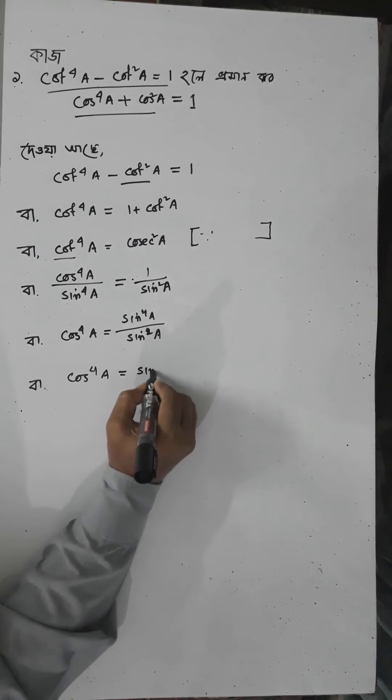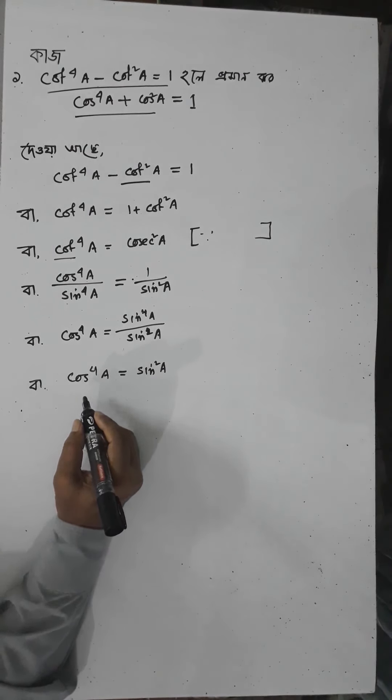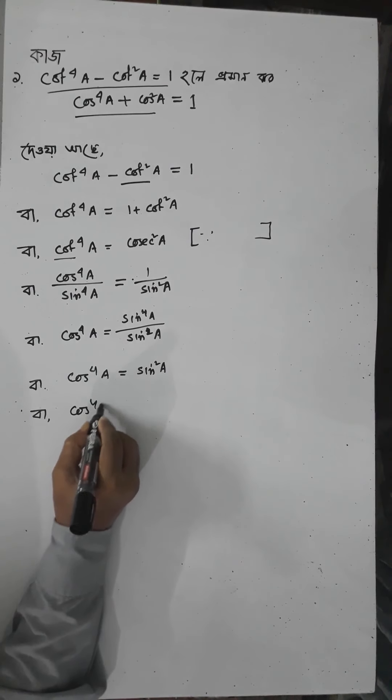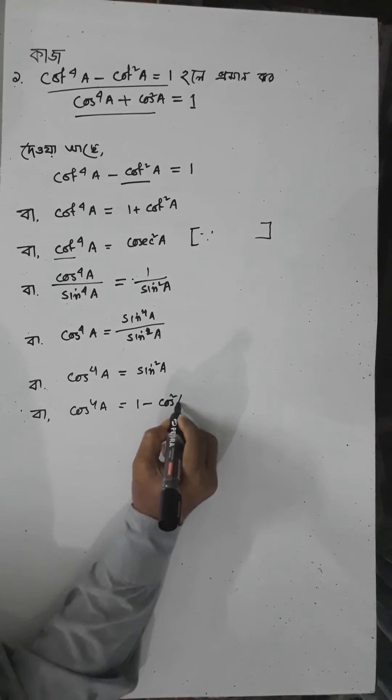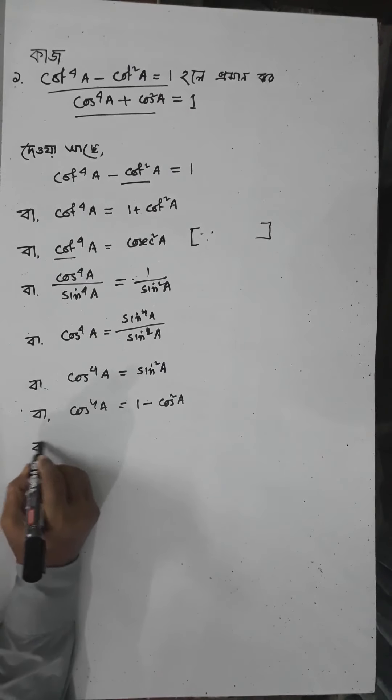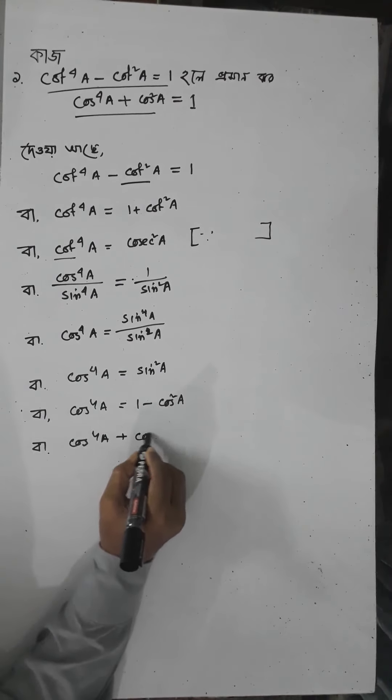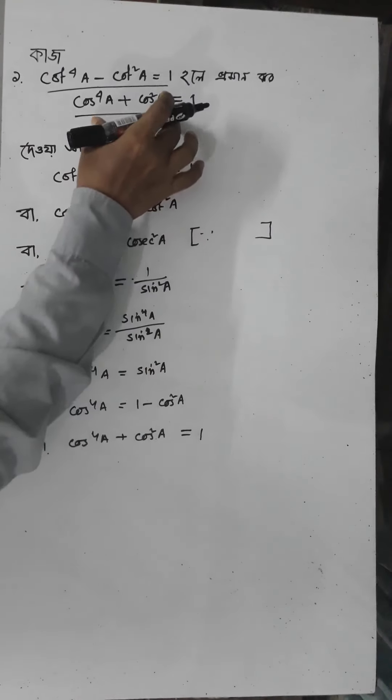Sin squared cos⁴a is sin²a and sin²a is 1 minus cos²a, so cos⁴a plus cos²a equals 1. This is the problem.